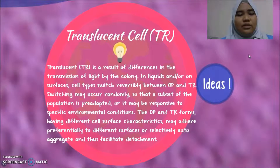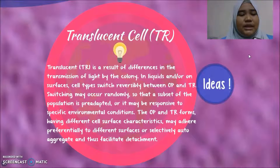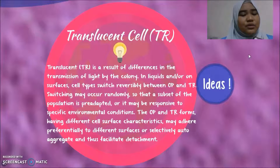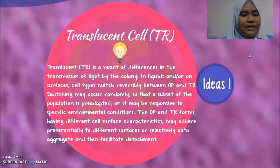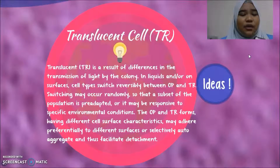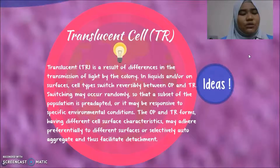Next, the translucent cell, or TR. The translucent cell is a result of differences in the transmission of light by the colony. In liquids or on surfaces, cell types switch reversibly between OPaC and TR. Switching may occur randomly so that a subset of the population is pre-adapted, or it may be responsive to specific environmental conditions. The OPaC and TR forms, having different cell surface characteristics, may adhere preferentially to different surfaces or selectively auto-aggregate to facilitate detachment.